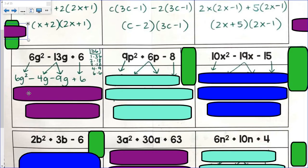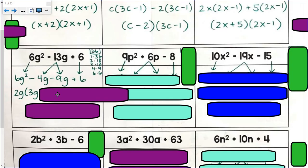I factor out my GCF of the first two terms. GCF would be 2g. 2g times 3g. And then minus 2. My next binomial starts with a negative. So remember we factor out a negative in this case.